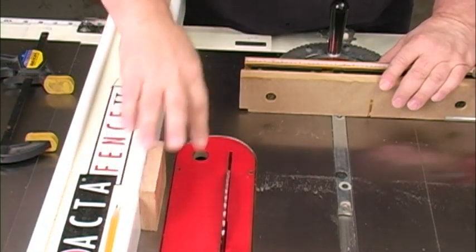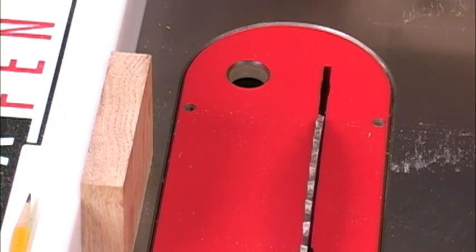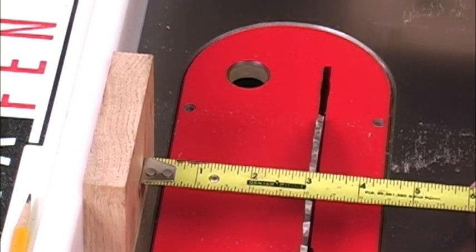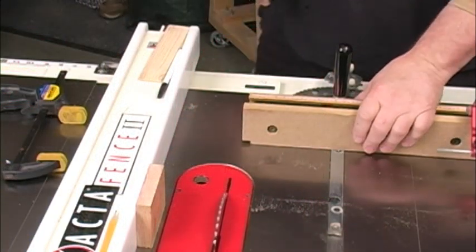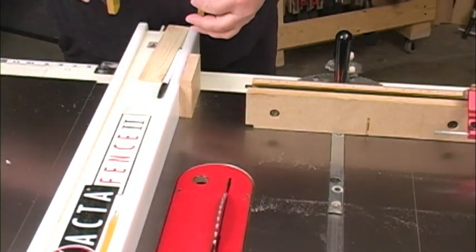To set the rip fence position, we move the gauge block forward till it's even with the blade. With the gauge block against the fence, we can measure from its surface to the blade to set our rip fence position. Then once the fence is locked down, we can move the gauge block back to our end of the fence and clamp it in position.